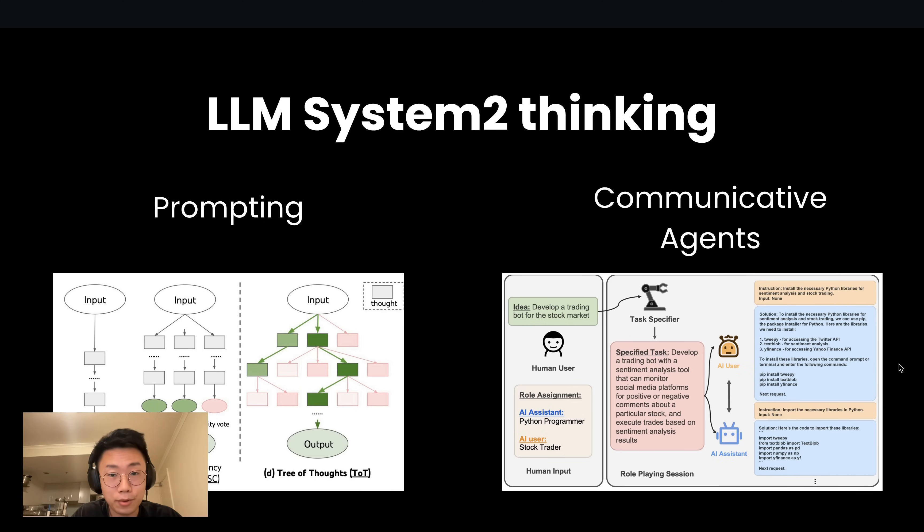So those are examples of some tactics you can use today to drive system two thinking with large language models. Honestly, I'm really keen to see a world where large language models actually have adaptive systems to solve really complex problems in a native way. Comment below if you know any other research and methods that can effectively drive system two thinking. I'll continue posting interesting projects and advancements in AI. So please consider giving me a subscribe if you enjoy this content. Thank you and I'll see you next time.